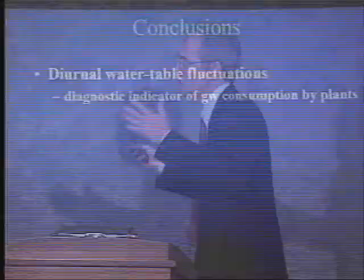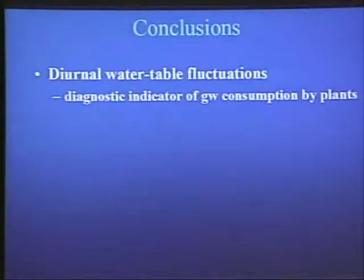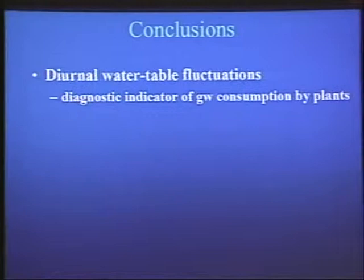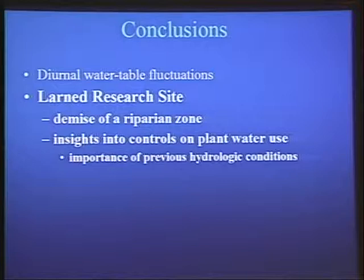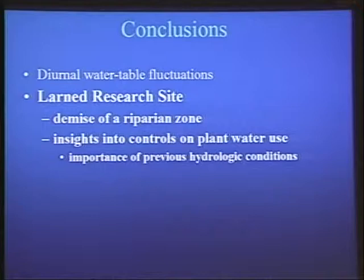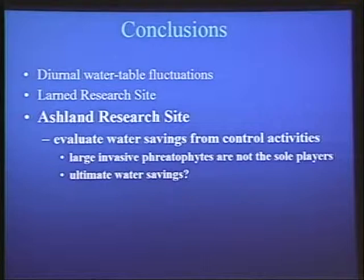In conclusion, I've tried to demonstrate that diurnal water table fluctuations are a diagnostic indicator of groundwater consumption by plants. These fluctuations provide insights — at the Larned research site — into factors leading to the demise of the riparian zone and into controls on plant water use and the importance of previous hydrologic conditions experienced by the vegetation. At the Ashland research site, we used diurnal fluctuations to evaluate water savings from control activities. What we realized is that large invasive phreatophytes are not the sole players, and that the ultimate water savings may be much less than anticipated from large-scale efforts to remove invasive phreatophytes.